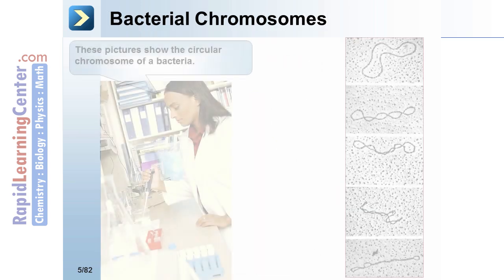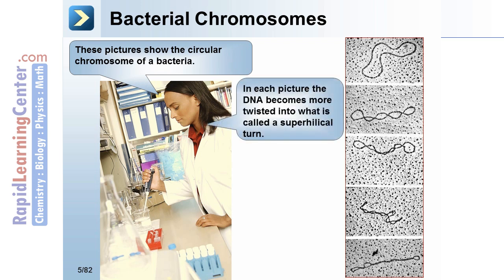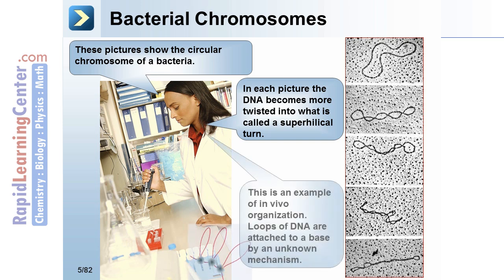Bacterial chromosomes. These pictures show the circular chromosome of a bacterium. In each picture, the DNA becomes more twisted into what is called a superhelical turn. This is an example of in vivo organization; loops of DNA are attached to a base by an unknown mechanism.